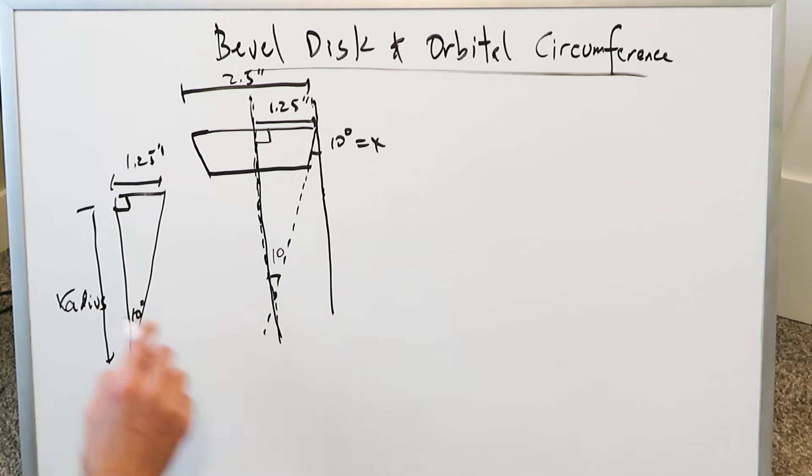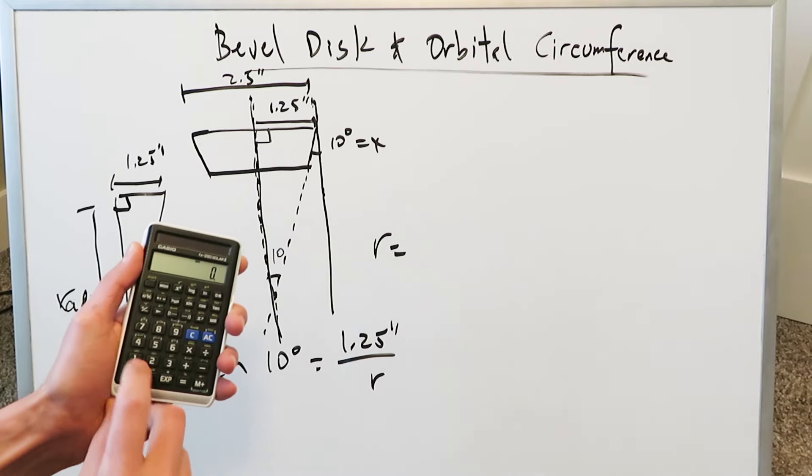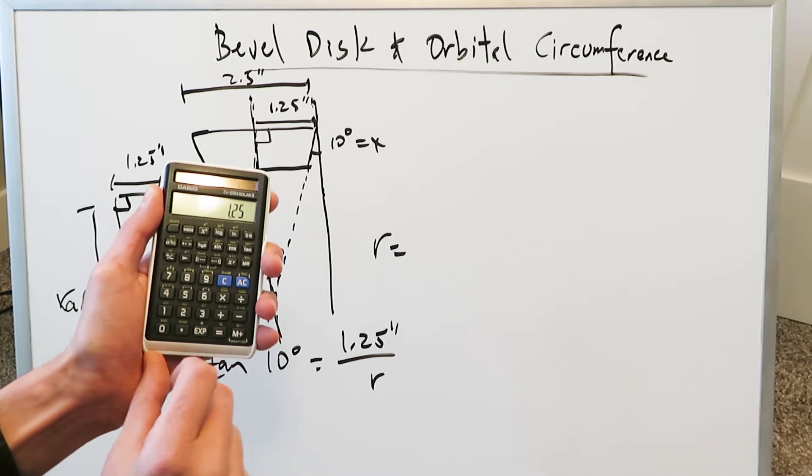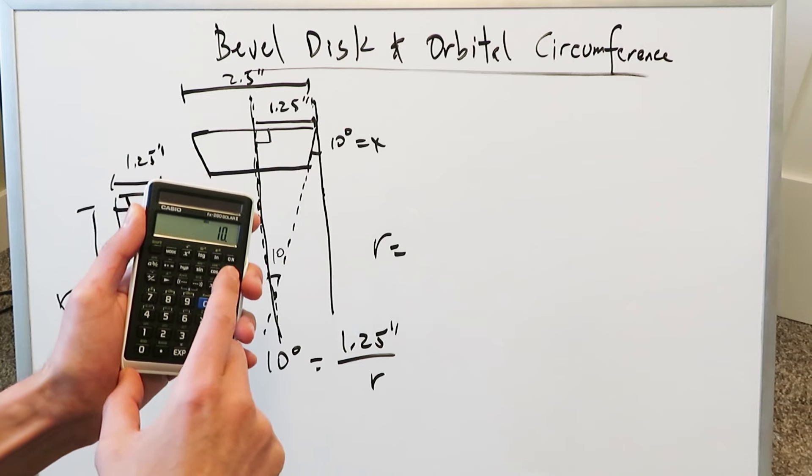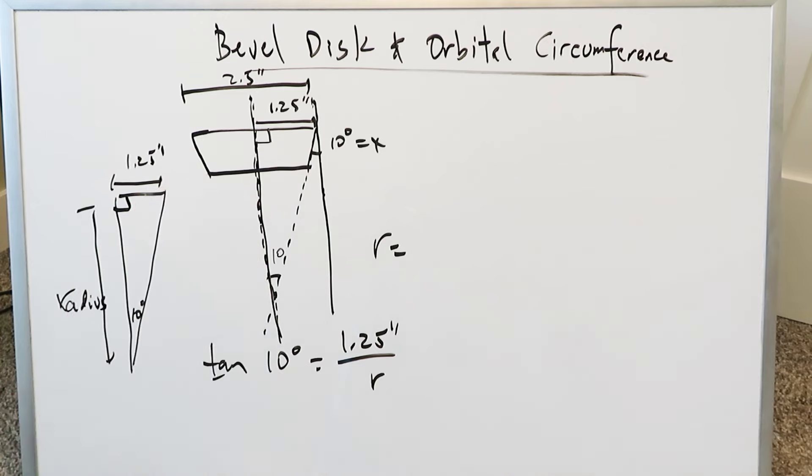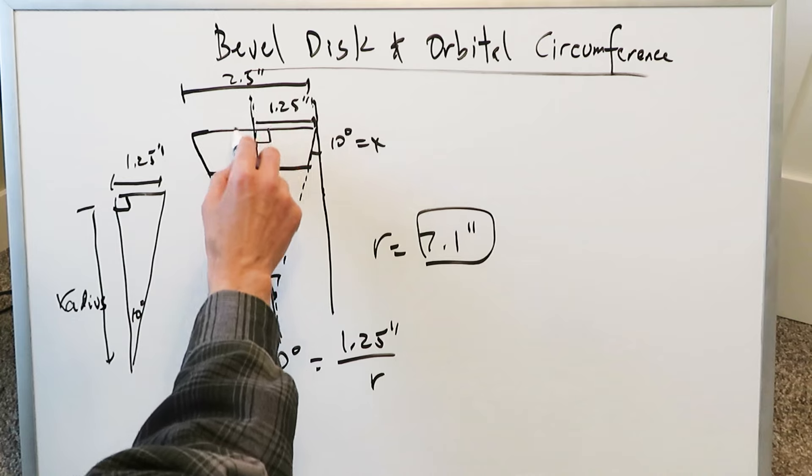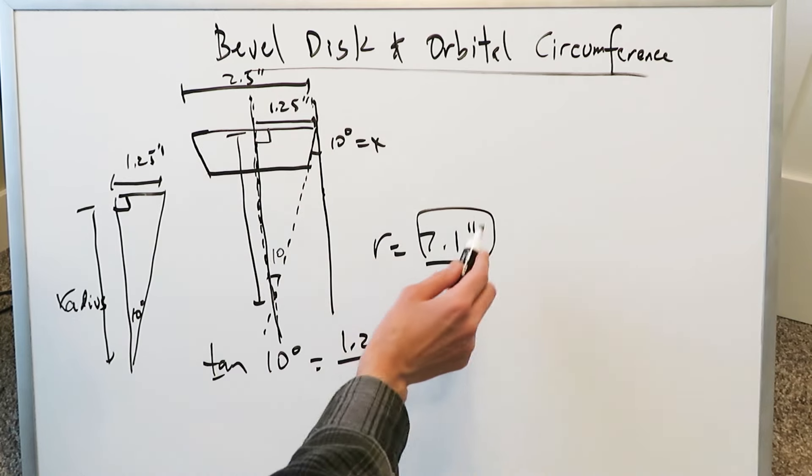And you can easily do that. You know with regards to this angle, 10, 10 degrees is always equal to the opposite, which is 1.25 inches divided by the adjacent, which is your radius. Calculate that radius. It's an easy calculation. It will be 1.25 divided by tangent of 10 degrees. And you have 7.089 inches. I'm getting a value here, 7.089, which I'm going to round to 7.1 inches. So the radius here is 7.1 inches.